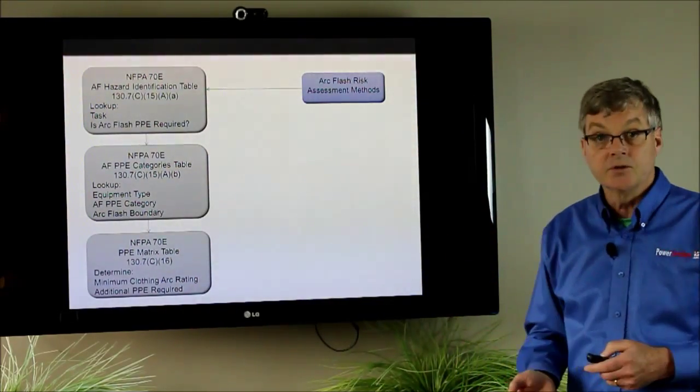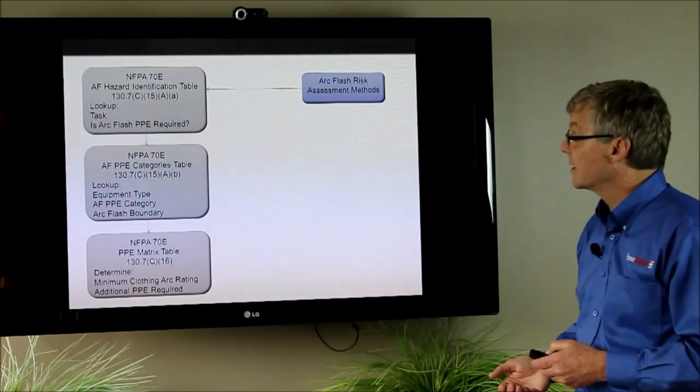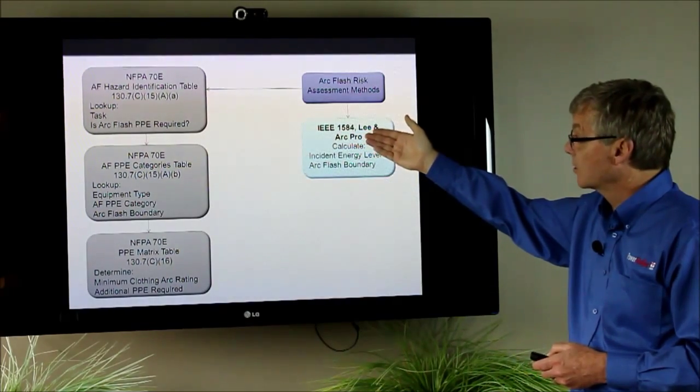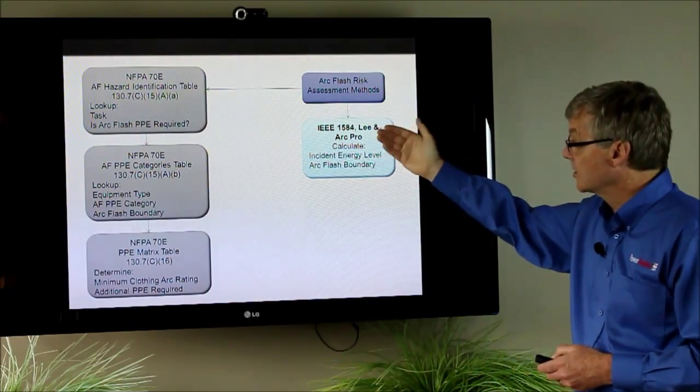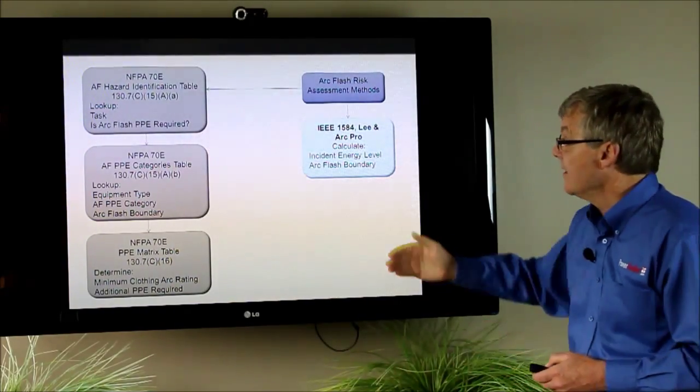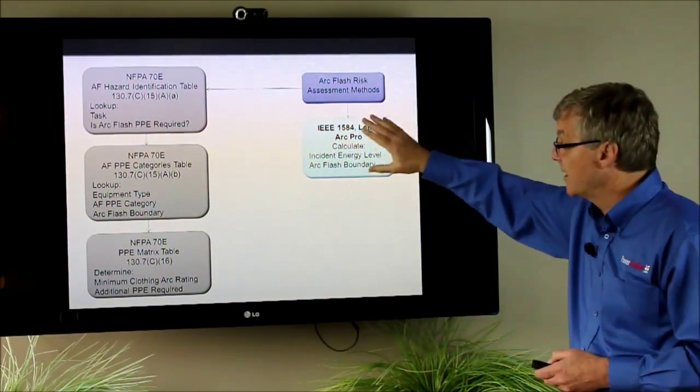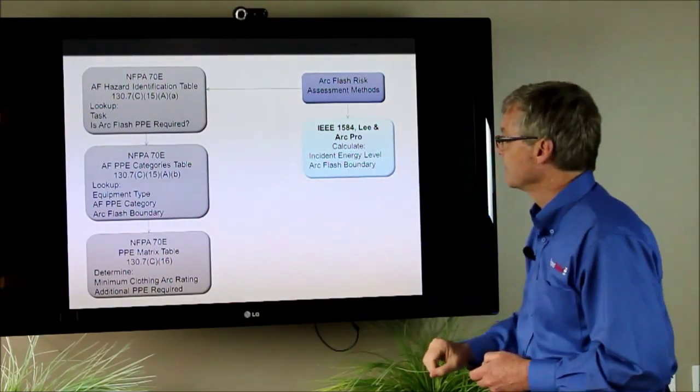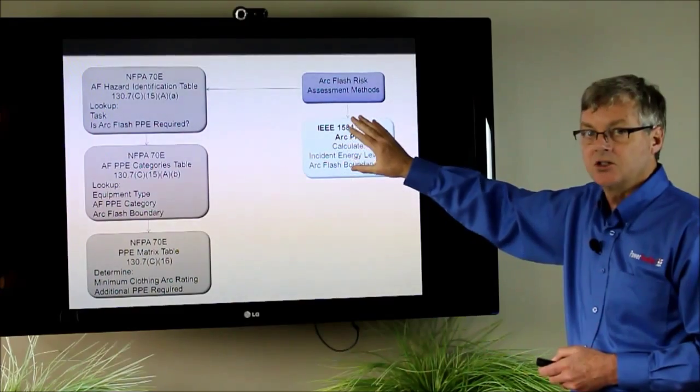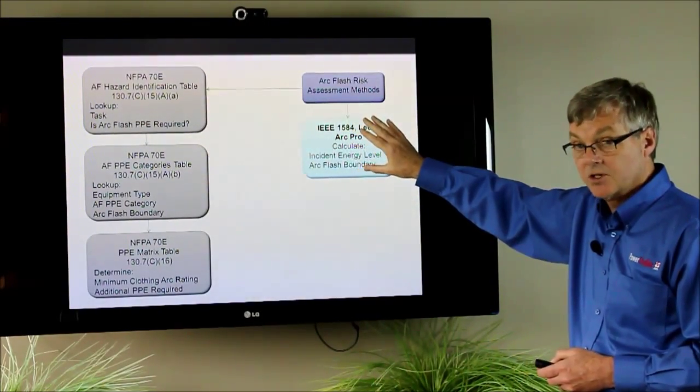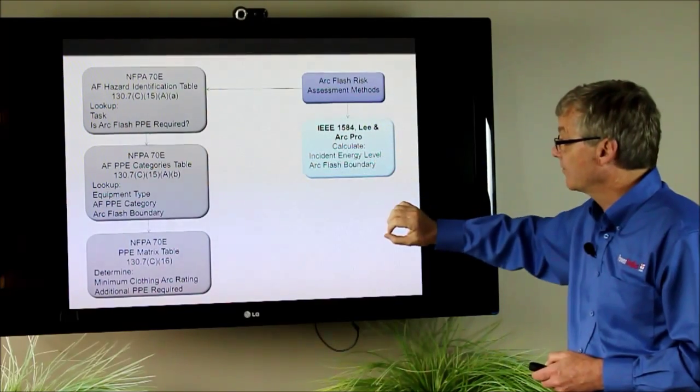The other way to do these arc flash studies and incident energy analysis is using the IEEE 1584 equations. The Lee equations or using arc pro to calculate your energy and the arc flash boundary. This method has nothing to do with risk, meaning risk is not a factor in it like this method is. Here we're calculating just the arc flash energy in calories per centimeter squared and what the arc flash boundary is going to be.